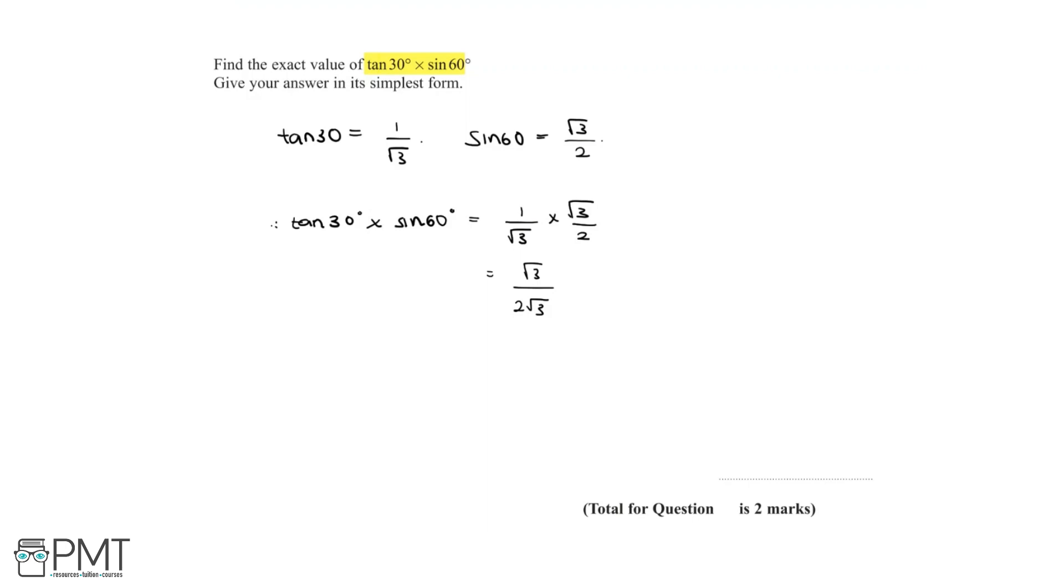Now the root 3's are going to cancel out, and so by dividing both the numerator and the denominator by root 3, we are left with 1 over 2.